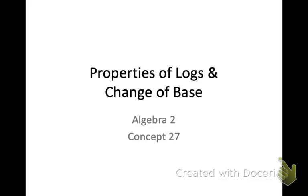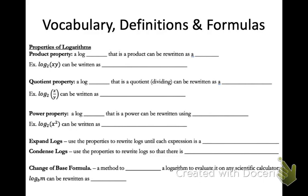Algebra 2, Concept 27: properties of logarithms and the change of base formula. For this concept, you're going to need to recall Unit 5a, where you first learned about logarithms. Remember, a logarithm is an equation whose value is an exponent. We're going to look at three different properties of logarithms, and you'll use those to expand and condense logarithms.